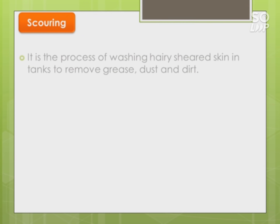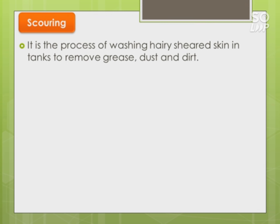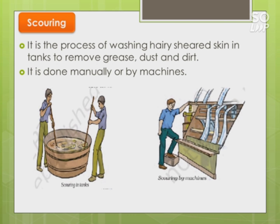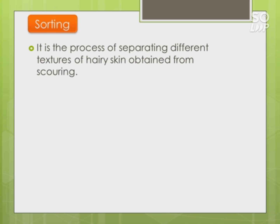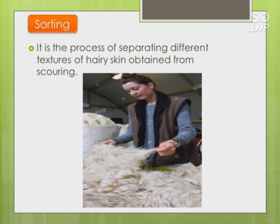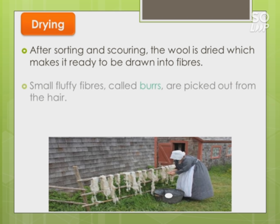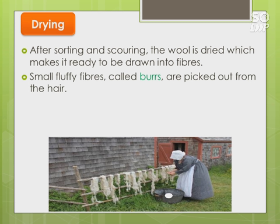Scouring is the process of washing the hairy sheared skin in tanks to remove grease, dust, and dirt. It can be done manually or with the help of machines. Sorting is the process of separating different textures of hairy skin obtained from scouring. After sorting and scouring, the wool is dried, which makes it ready to be drawn into fibers. Some small fluffy fibers called burrs are picked out from the hair, and then the fibers are scoured again and dried.